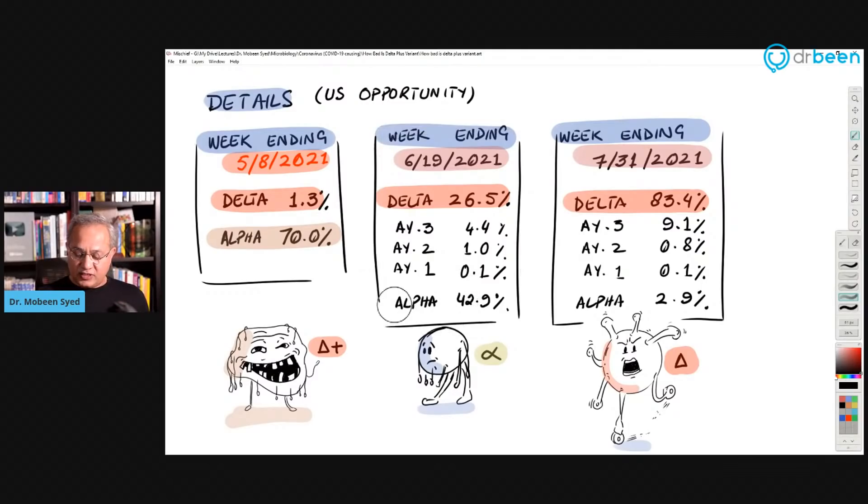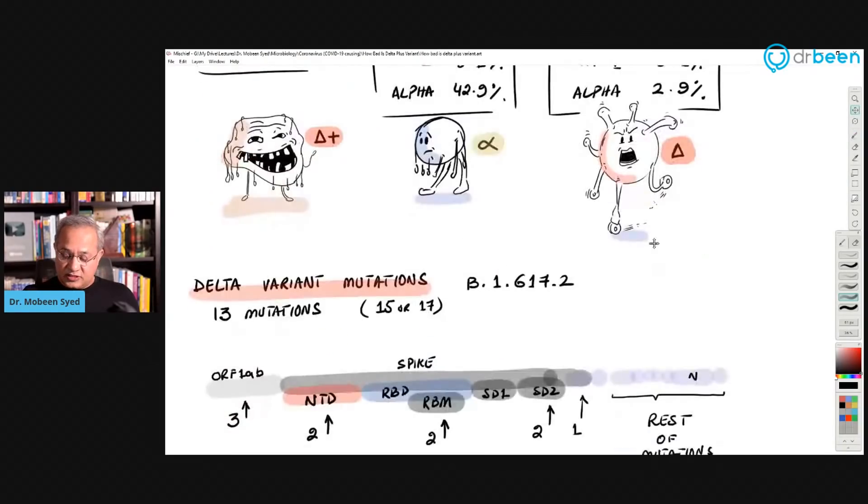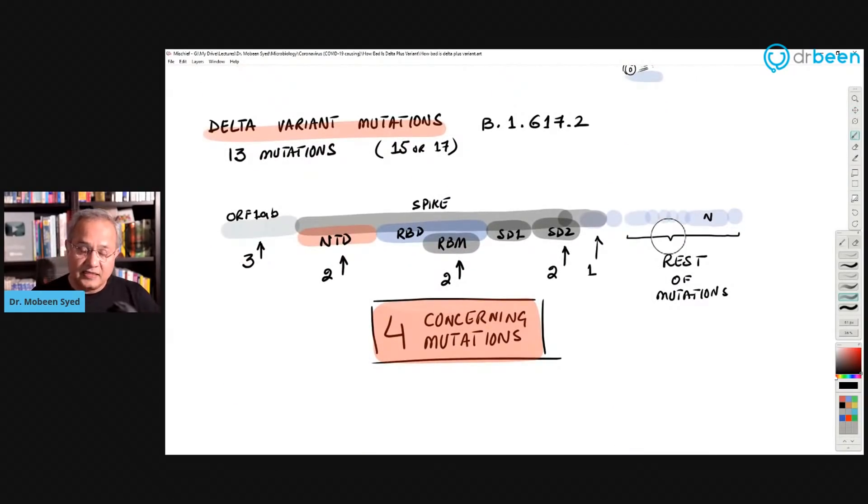And if we look at something in the middle, 619, once again, if you see Alpha was 42.9%. Delta, AY3 existed at that time. Delta plus existed at that time as well. If you look at Delta, that had become 26%. AY3 had only become 4.4%. And then now, Delta does show a greater ground taken. So from this discussion, you can actually see that Delta is making faster and more rapid. It's taking more ground. Delta plus is not. So is Delta plus something scary that we should be scared of? No.